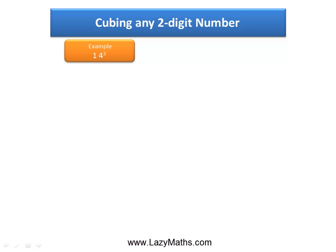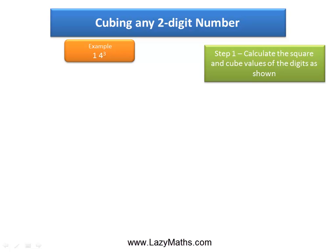Here's an example of cubing any two-digit number: 14 cubed. Step 1 is to calculate the square and cube values of the digits as shown: 1 cubed, 1 squared times 4, 1 times 4 squared, and 4 cubed.